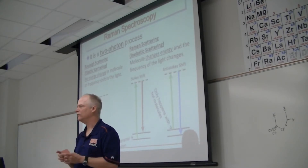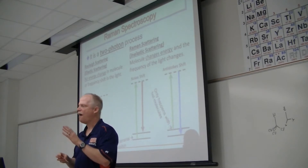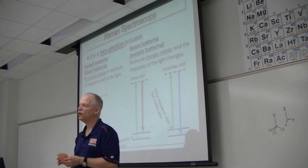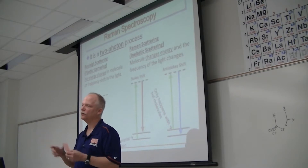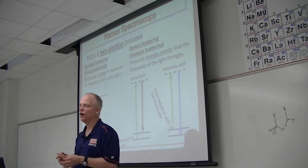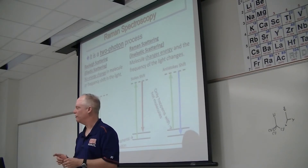Our new laser is a 532 nanometer laser — the green laser — and our visible detector can now detect the CH stretch region. So our Raman trace, which has the Raman spectrum of acetonitrile and benzene, will go all the way out past the CH stretch, and so will our IR spectrum. We're going to get full data for all of the vibrational modes for both molecules.